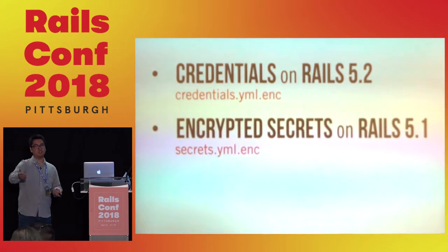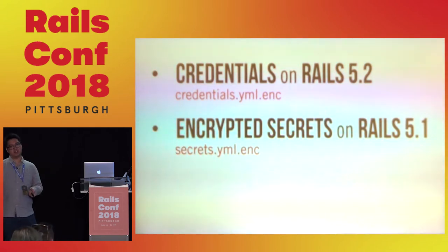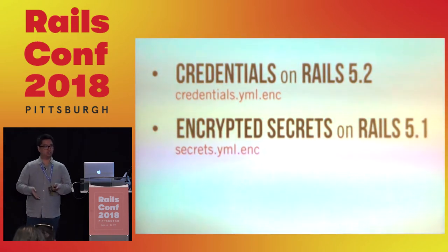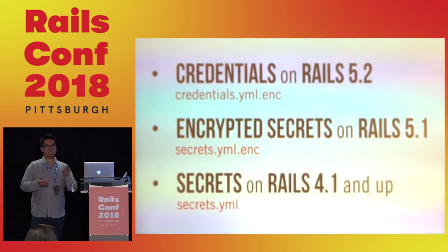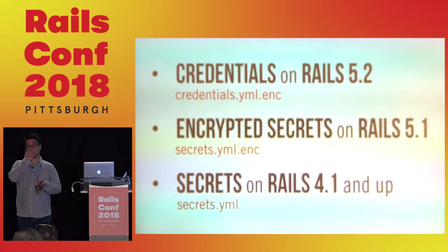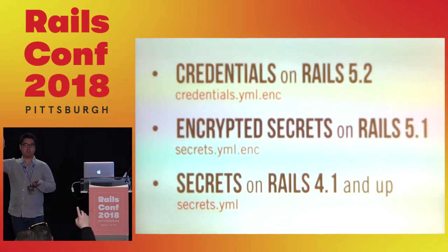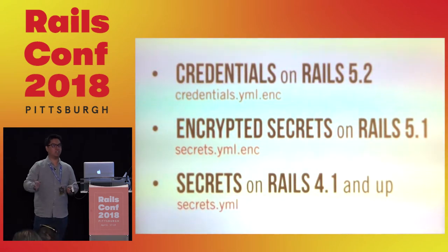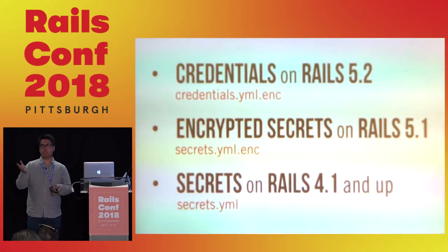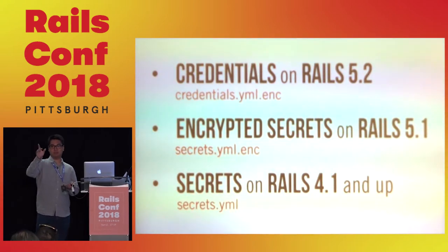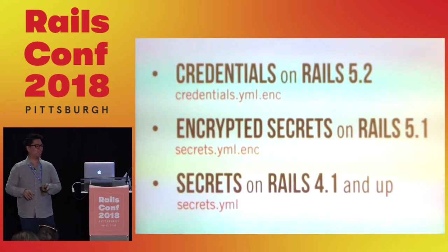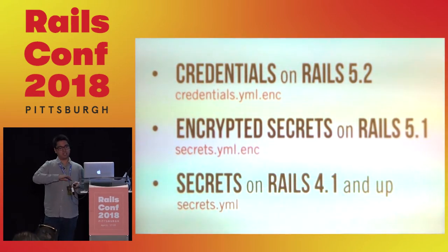From 5.1 to 5.2, they introduced Encrypted Secrets and then deprecated it. You could still use it — I'm not sure when they'll remove it, maybe Rails 6. And then secrets.yaml, which is Rails 4.1 and up. I guess most of you are using that. I see some people who didn't raise their hands — they're using Rails 3.2.